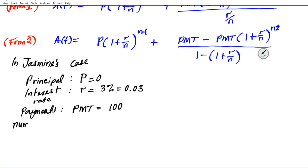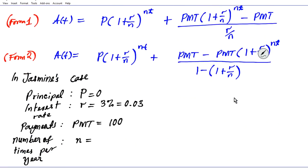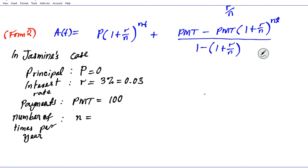How many times is her interest compounded - the number of times per year that interest is added to her account? This is the n value in the formula. It's compounded monthly, so there are 12 months in a year. Therefore n = 12.